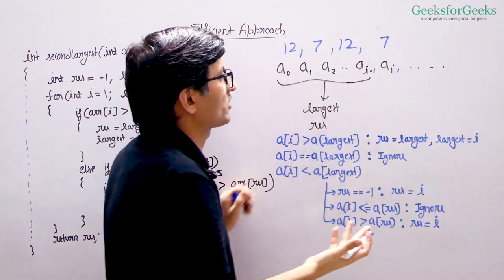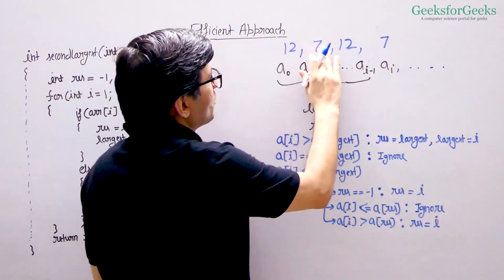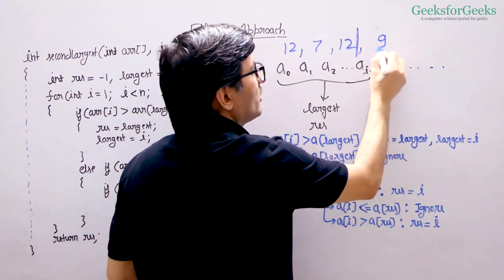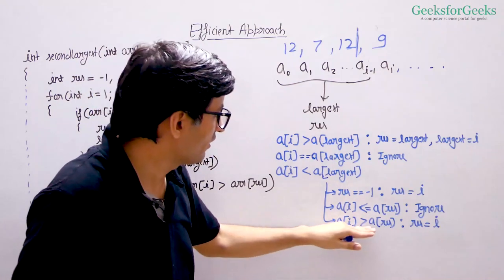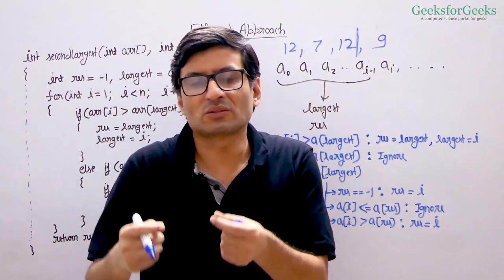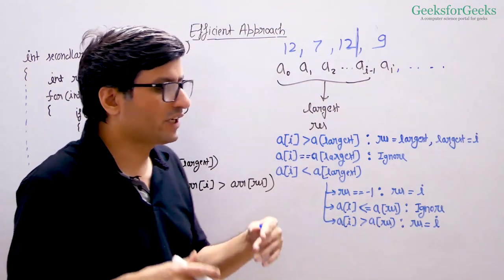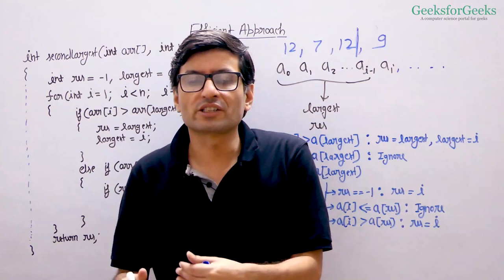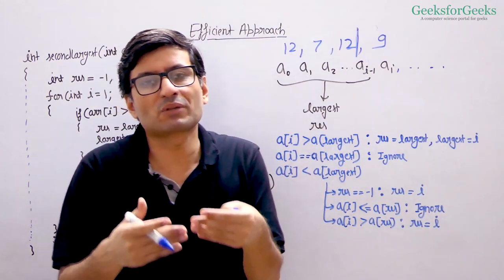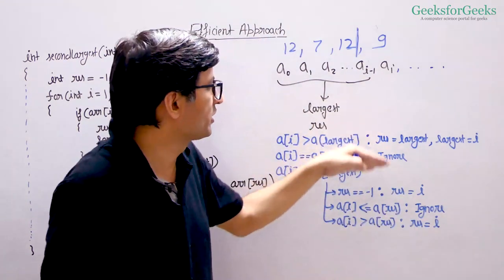The third sub-case is when a[i] is greater than the current second largest. Suppose you had these elements so far and now you see 9 — a[i] is smaller than the largest but greater than the result. In this case you update the result to index i. We can handle all cases for an upcoming element and accommodate it in our existing stream in O(1) time using these comparisons.